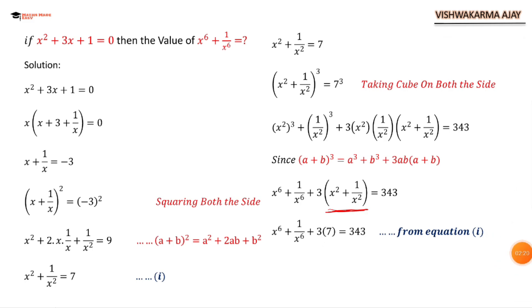21 will shift to the other hand side of the equation, and we have x⁶ + 1/x⁶ = 343 - 21 = 322.